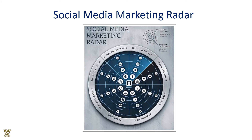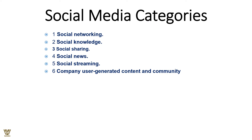Social media marketing covers social bookmarking, social networking, social streaming, social search, and social knowledge. RSS — Really Simple Syndication, or Rich Site Summary — is very useful. The categories for social media are social networking, social knowledge, social sharing, social news, social streaming, and company user-generated content.